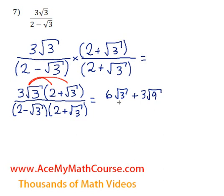Then over here we have 3 root 3 times root 3, which is 3 root 9, because root 3 times root 3 is root 9. All over, down at the bottom, we're going to need to FOIL this. Multiply the first, the outside, the inside, and the last.